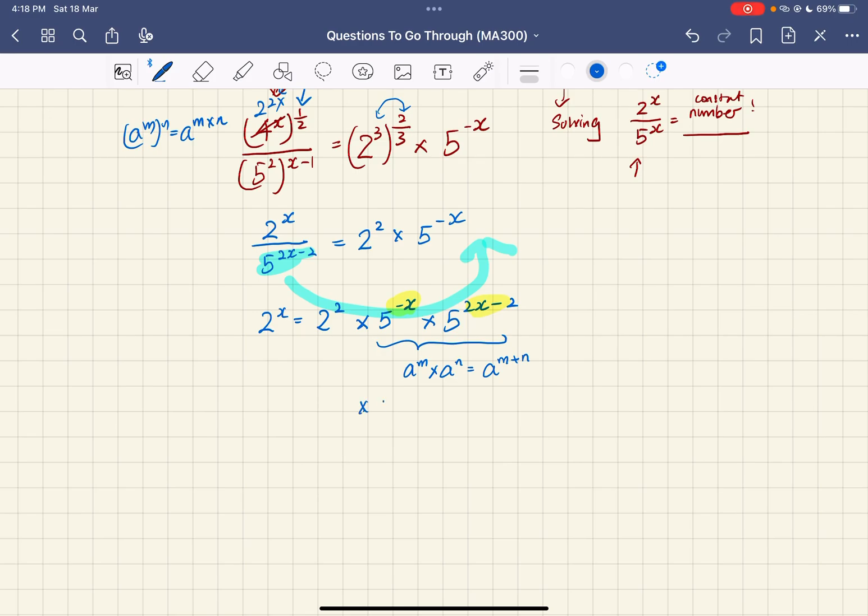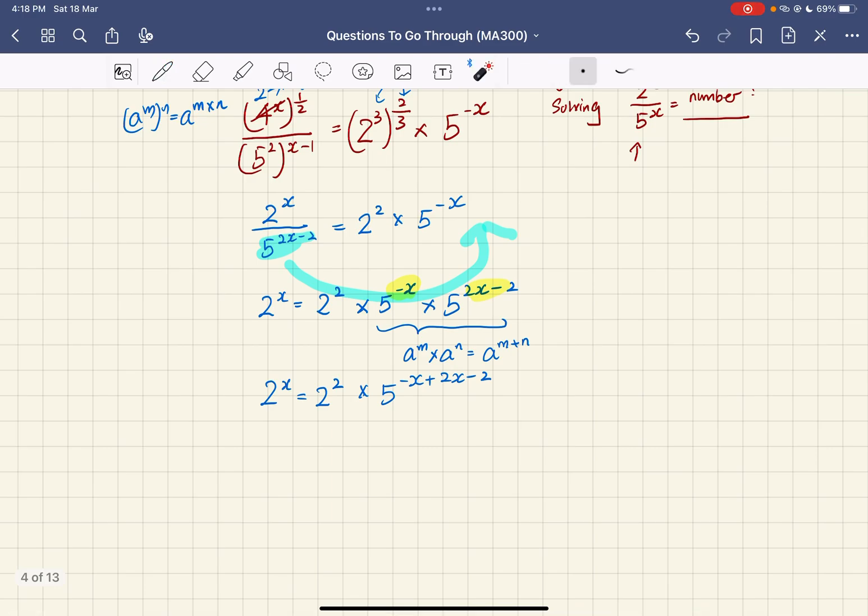This gives us 5 to the power of (-x + 2x - 2). On the left side, 2 to the power of x. Now just copying what I have on the right: 5 to the power of (-x + x) gives us 5^(x-2). So 2^x equals 2^2.